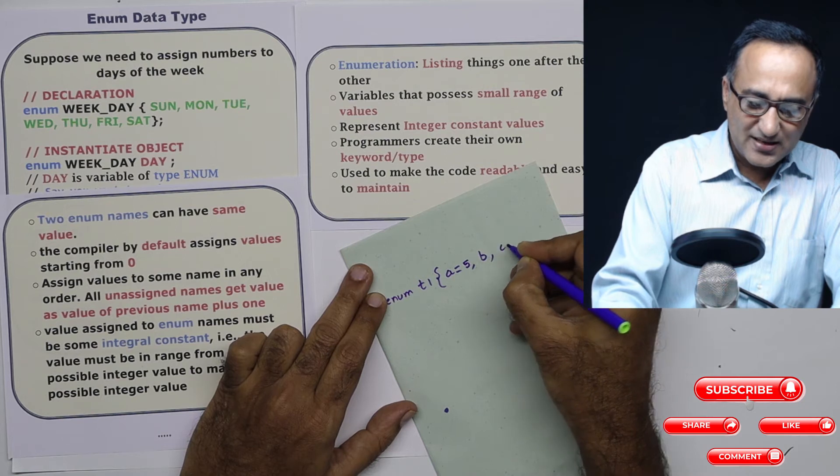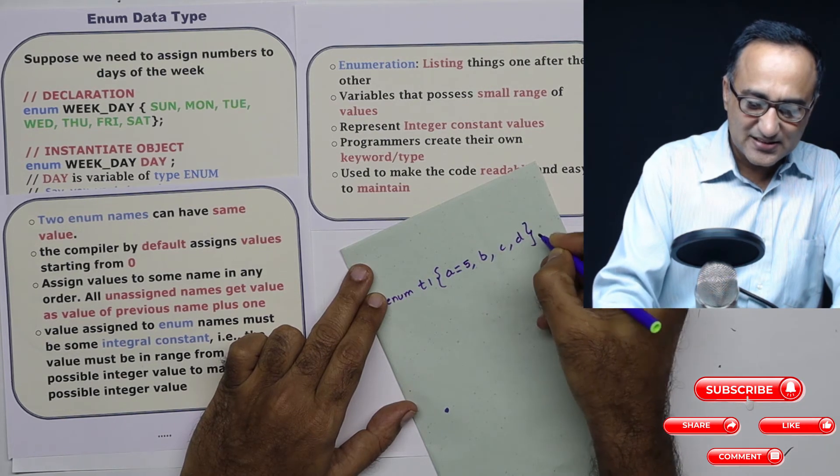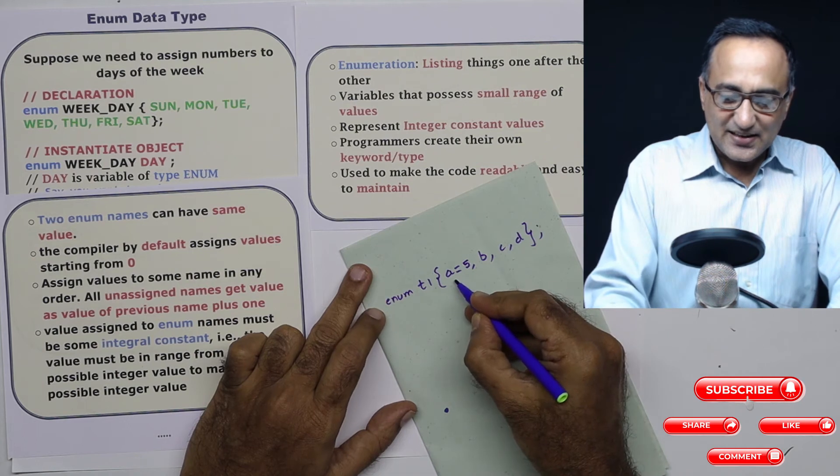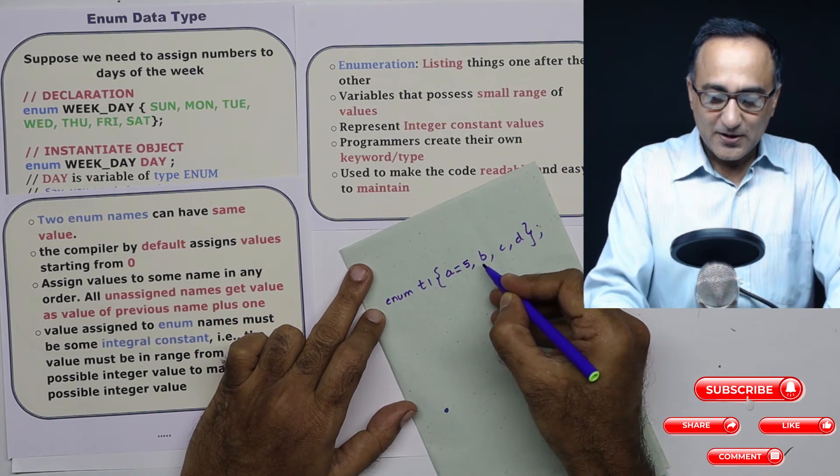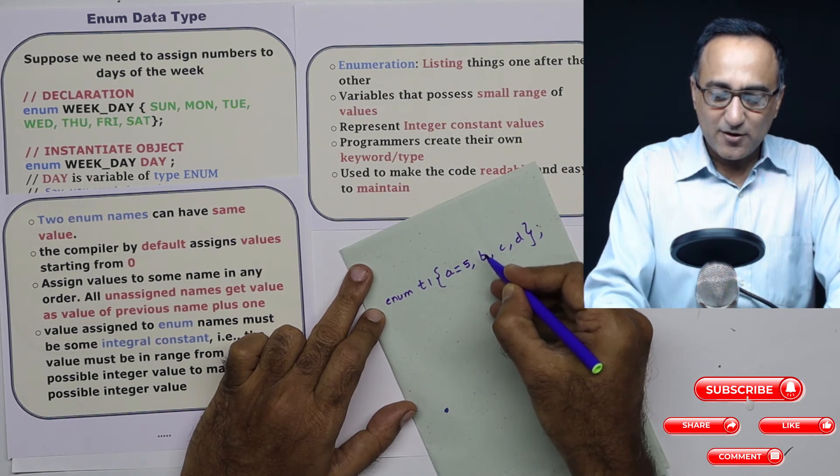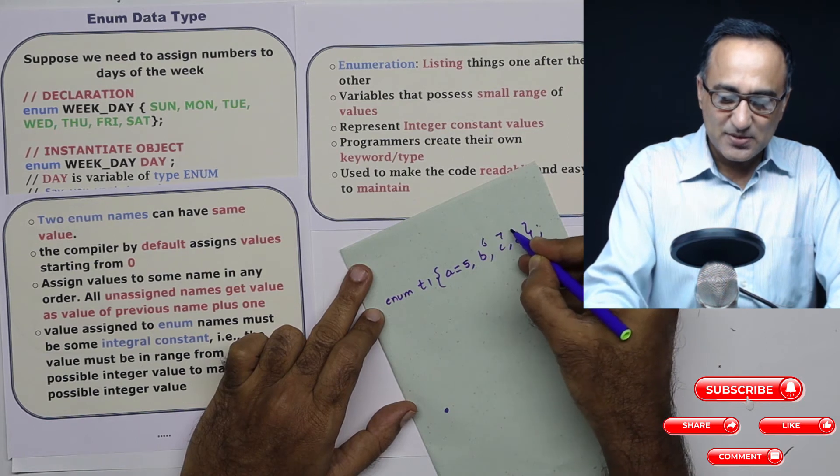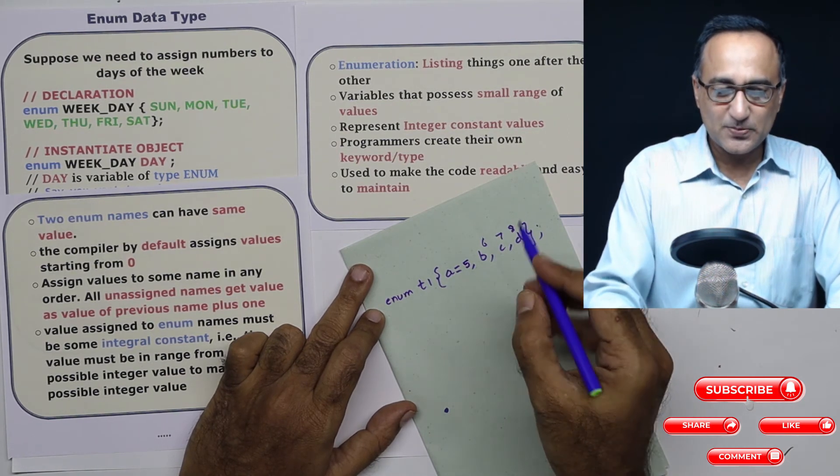Then I can leave b, c and d like this. So here what happens is, it gives a the value 5, b will automatically take the next value after 5, b will be 6, this will be 7, this will be 8. This is the first part.